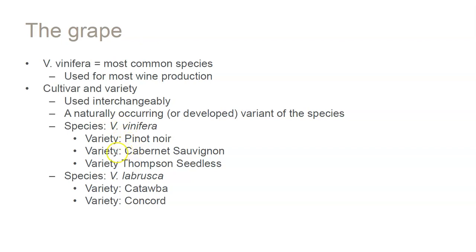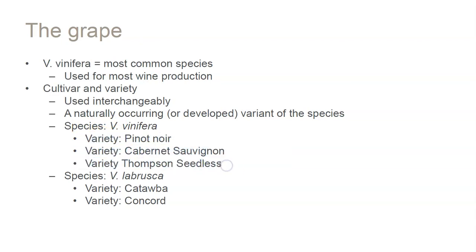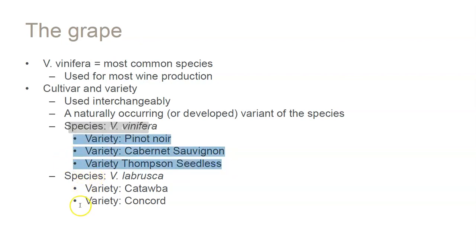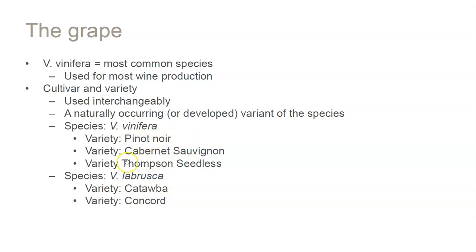So the species is vinifera, and then we have varieties like Pinot Noir, Cabernet, Syrah, Thompson Seedless. Technically these are cultivars, not varieties, but we call them varieties in the wine industry. When you hear about things being varietally labeled — varietal wines — that means single variety, like Pinot Noir.